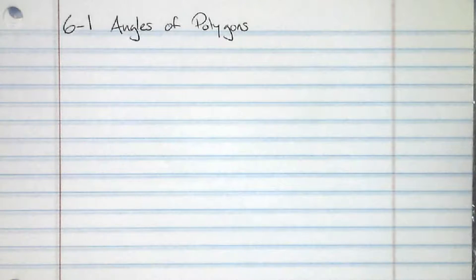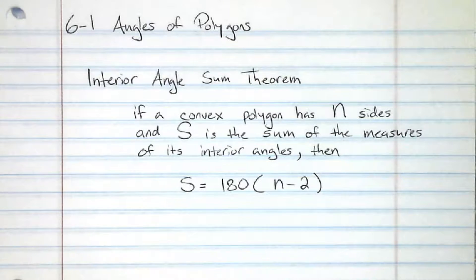Section 1, Angles of Polygons. So for this section, there's one equation that we have to be really familiar with. And here it is. S equals 180 times the difference of n and 2.